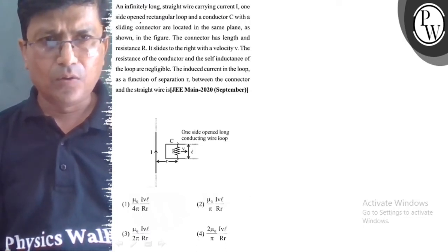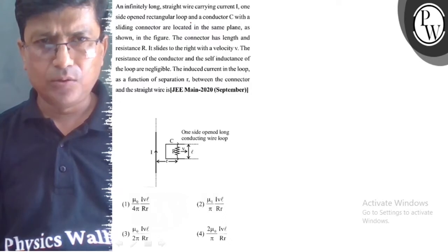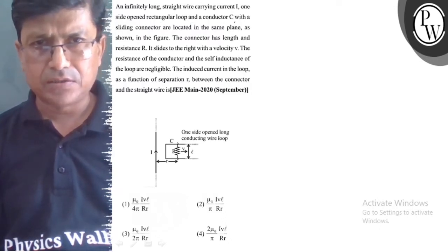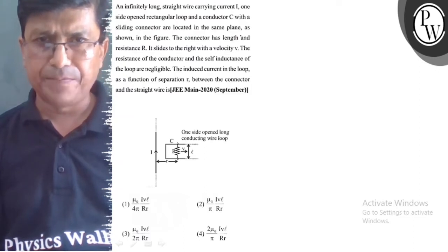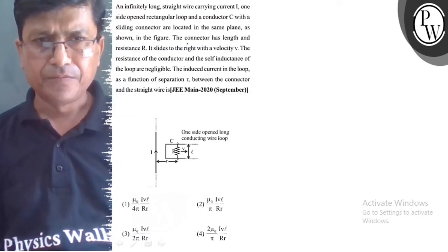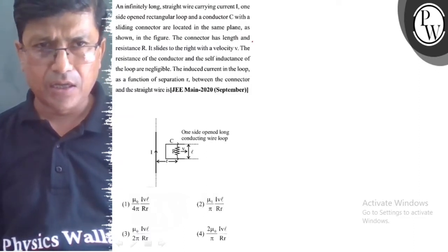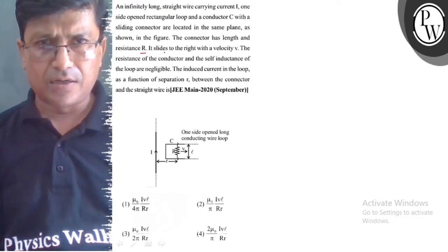One side opened rectangle loop and a conductor C with a sliding connector are located in the same plane. As shown in the figure, the connector has length L and resistance capital R.